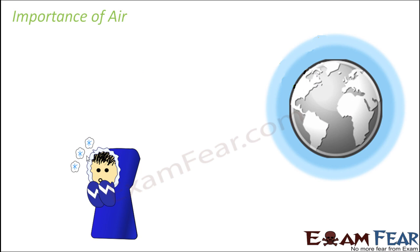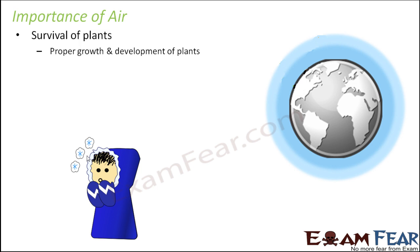Now let us talk about the importance of air. Atmosphere is basically air — it is the layer of air surrounding the planet — and when we use the term 'air' we refer to the air present all around us. These are just two different ways of referring to almost the same thing.